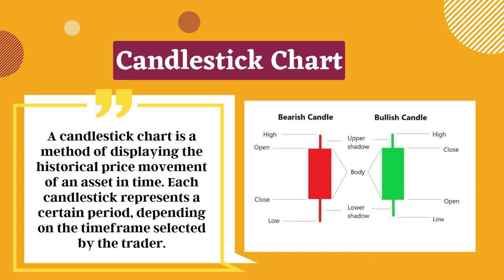Each candlestick represents a certain period depending on the time frame selected by the trader. This is called the body, which represents the open to close range. And this is called the wick or shadow, which represents the high or low of a price for a given period.